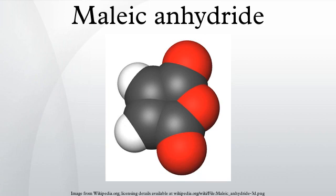Liquid maleic anhydride is available in road tankers and tank containers made of stainless steel, which are insulated and provided with heating systems to maintain a temperature of 65 to 75 degrees Celsius. Tank cars must be approved for the transport of molten maleic anhydride. Liquid molten maleic anhydride is a dangerous material in accordance with RIDADR. Solid maleic anhydride pastilles are transported by trucks, with packaging generally in 25 kg polyethylene bags.